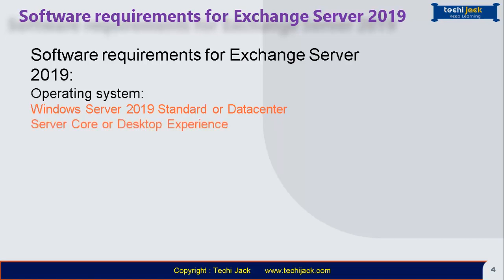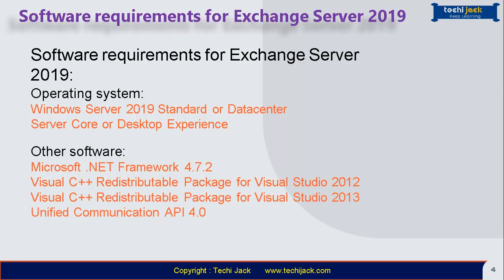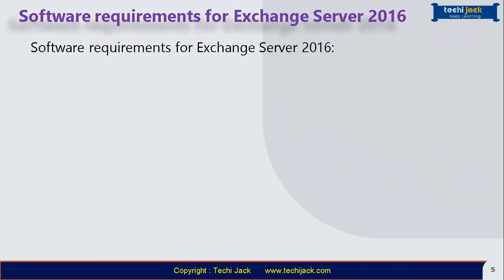For Exchange Server 2019, the operating system requirement is Windows Server 2019 Standard or Datacenter, and it can be installed on Server Core or Desktop Experience. Other software requirements include Microsoft .NET Framework 4.7.2, Visual C++ Redistributable Package for Visual Studio 2012 and 2013, and Unified Communications Managed API 4.0.